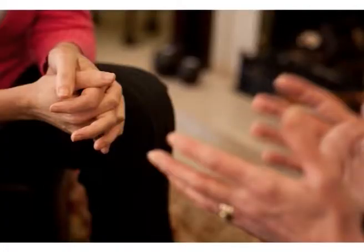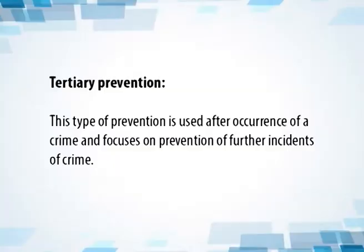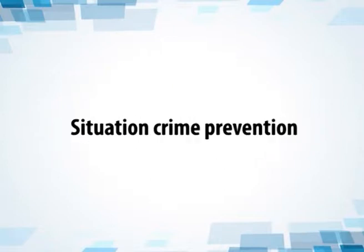Second is secondary prevention. In this, the main focus is on youth who drops out of school and gets involved in criminal activities. Various social programs and law enforcement plans are made and executed in areas where crime rate is high. Proper counseling programs for youth have helped in reduction of crime rate. The third mode of prevention is tertiary prevention — this type is used after occurrence of a crime and focuses on prevention of further incidence of crime. And lastly is situational crime prevention, which focuses on ways to reduce the opportunity to commit crime, including increasing the difficulty of crime, the risk factors, and the reward after crime.